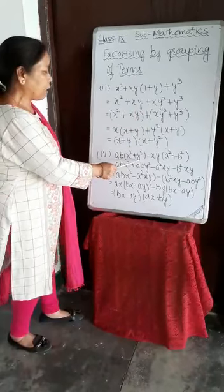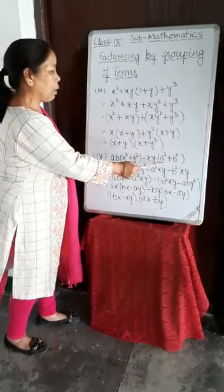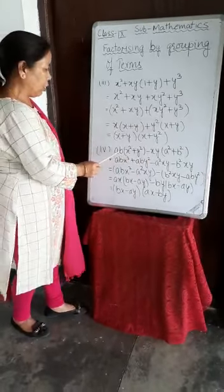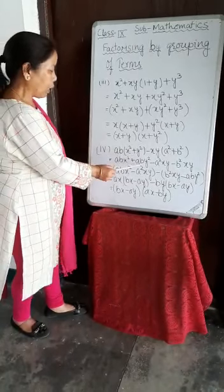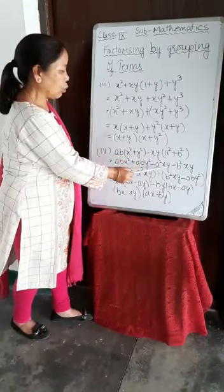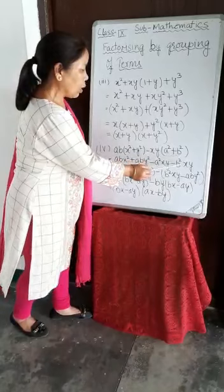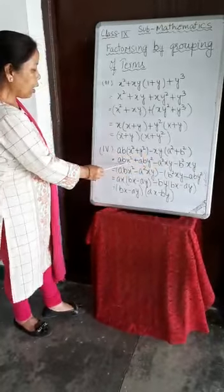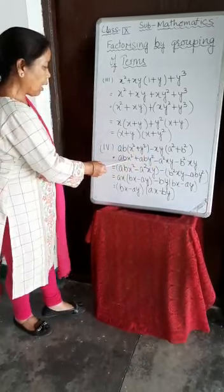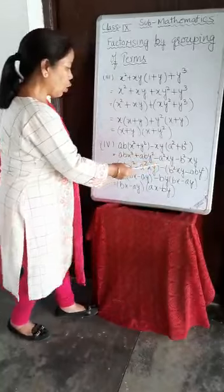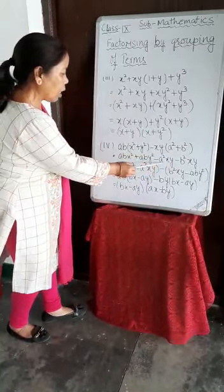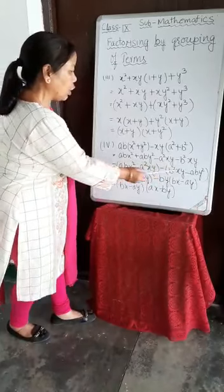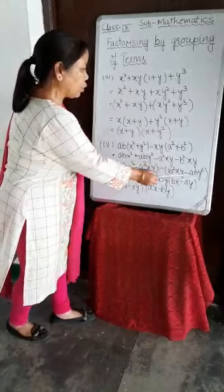Now the fourth example: AB(X squared plus Y squared) minus XY(A squared plus B squared). Nothing is common, so we open the brackets first, giving ABX squared plus ABY squared minus A squared XY minus B squared XY. We group ABX squared minus A squared XY together, and then take the minus sign common for the remaining terms so ABY squared minus B squared XY becomes minus(B squared XY minus ABY squared).